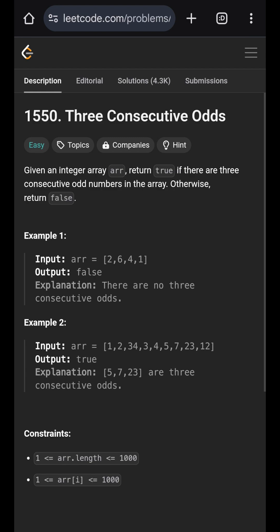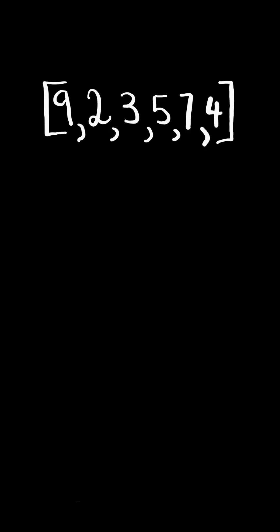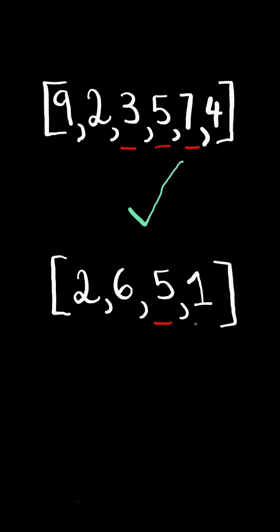Three consecutive odds. Given a list of numbers, return true if there are three consecutive odd numbers. If there are no three consecutive odd numbers, then we return false.